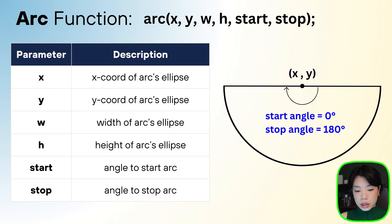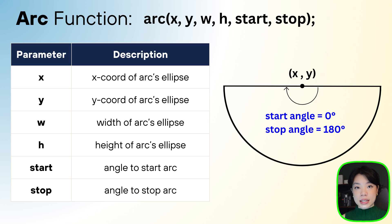Let's start by making a Pac-Man. A Pac-Man is basically in the shape of a circle, but it's only three quarters of a circle. We can use an arc function to draw that shape. The arc function takes a total of six arguments: the first two are the x and y coordinates of the center, the third and fourth are the width and height, and the fifth and sixth are the starting angle and the ending angle of that arc.